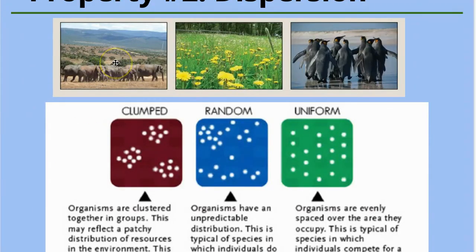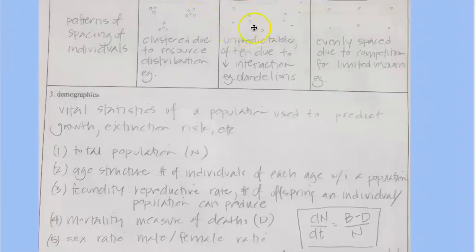So like elephants on a large dry area would be clumped around water or, and then also clumped around water would be vegetation. And so you would, it has to do with patchy distribution of resources.